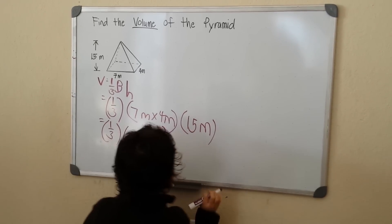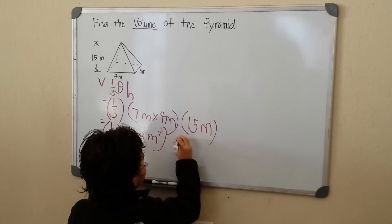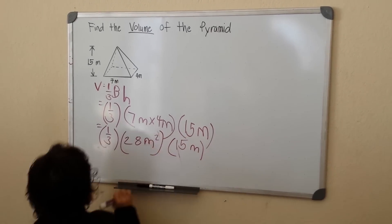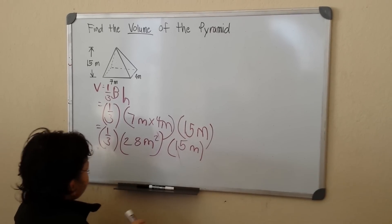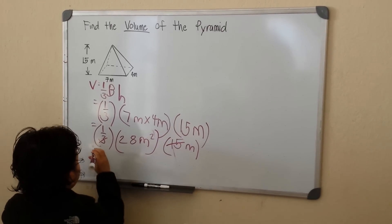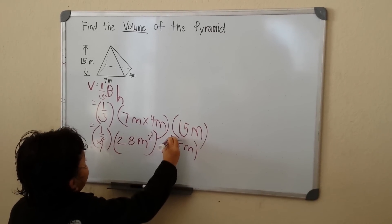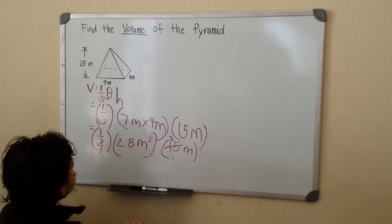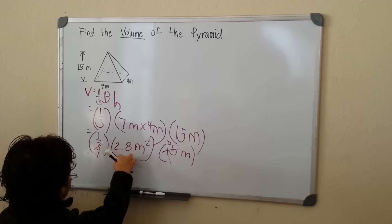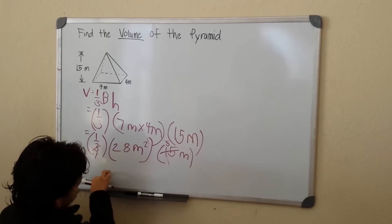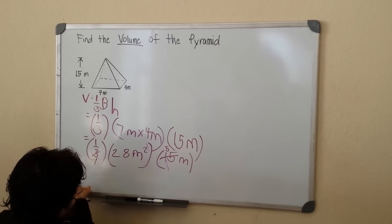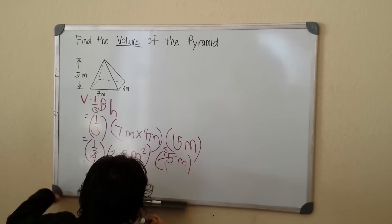And then we get 15 meters. We can cross cancel 3 and 15 to 1 and 5. So 1 times 28 is 28, times 5.